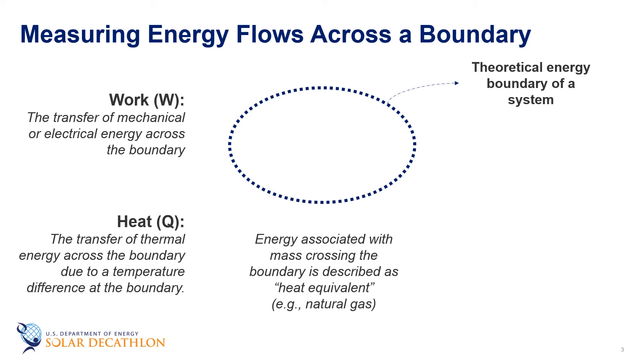We symbolize work with a W and heat with a Q, and that represents the energy that has crossed the boundary. When I add energy to a system, that has to be equal to the change of energy of that system. We show the change of energy as the change of E. So in this simplified version of the first law of thermodynamics, we can look at work plus the heat going in has to be equal to the change of energy within that system or within that control volume.